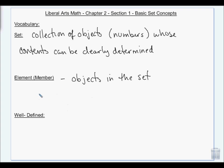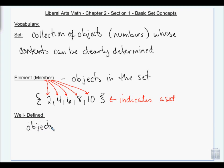Set notation uses this bracket. So if we have a set, these are the elements. And this indicates it's a set. We don't use parentheses. We don't use the square brackets. We use these squiggly brackets. And for it to be well-defined, that means the objects are clearly determined.